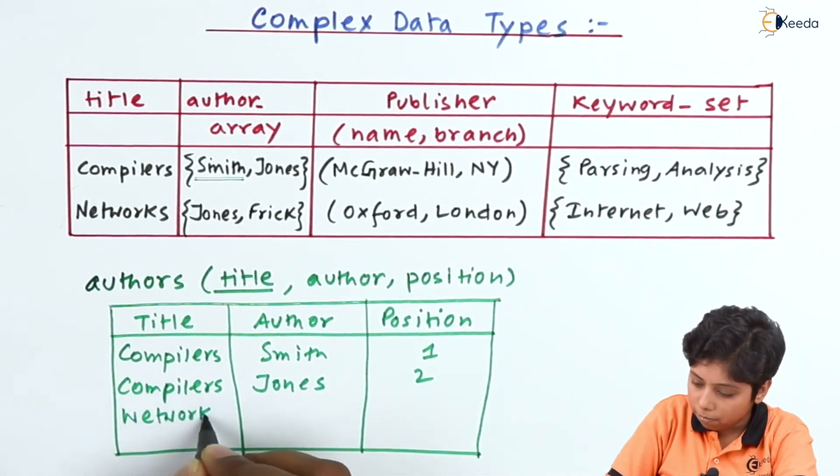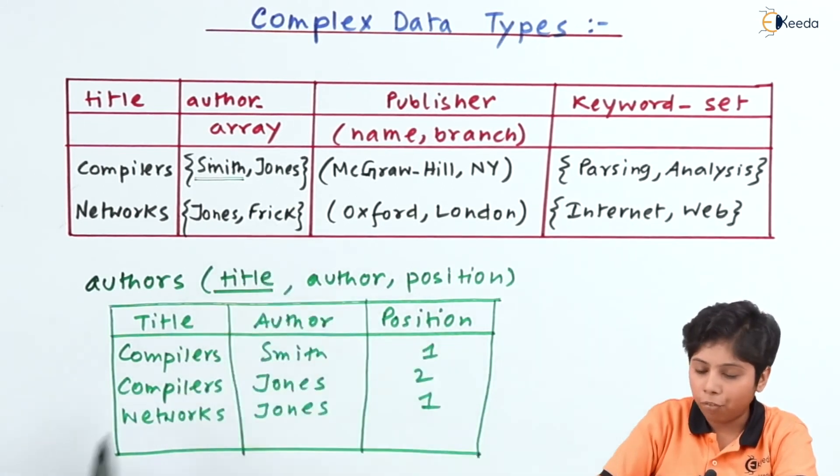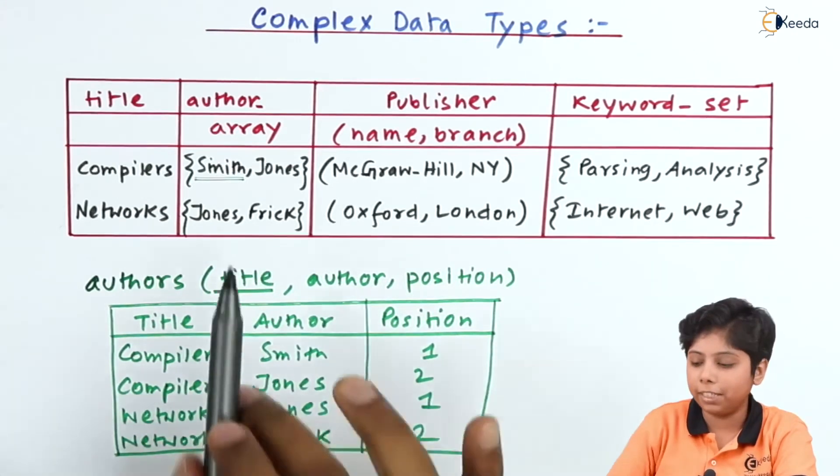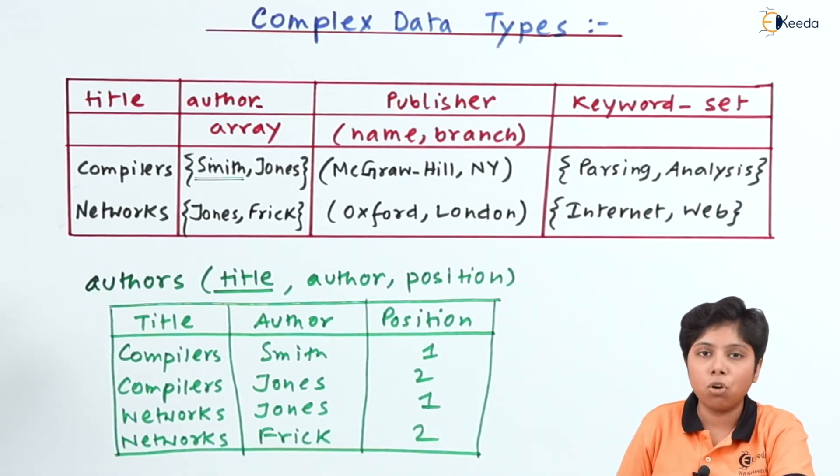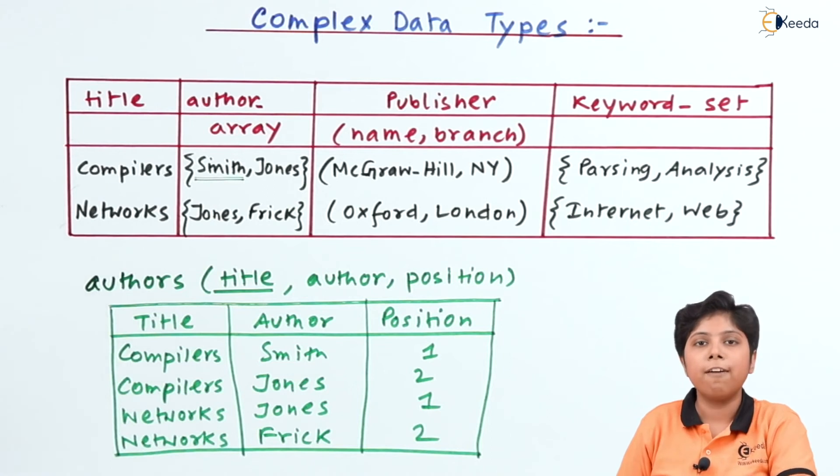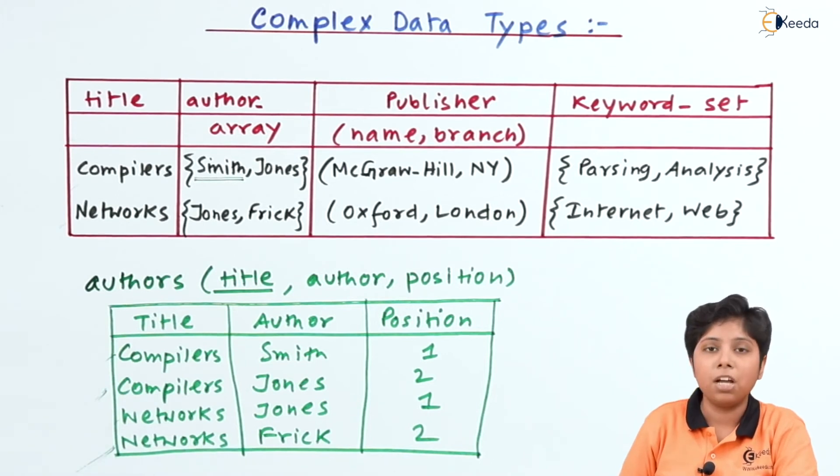Now in the networks, we have Jones with position 1 and Frick with position 2. So first I am getting the author array separated from the publisher and keyword set. So the relational schema will not become a redundant one while we make a database out of it.